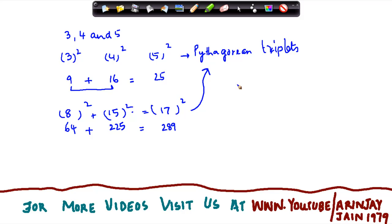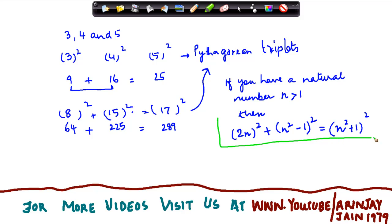The rule for Pythagorean triplets is that if you have a natural number n which is greater than 1, then in a Pythagorean triplet: (2n)² + (n² - 1)² = (n² + 1)². So this basically is your rule for a Pythagorean triplet.